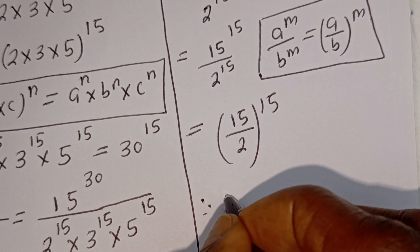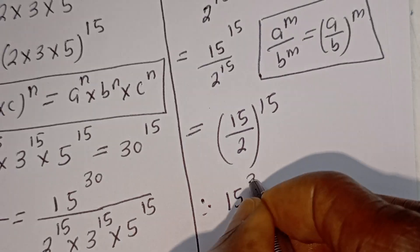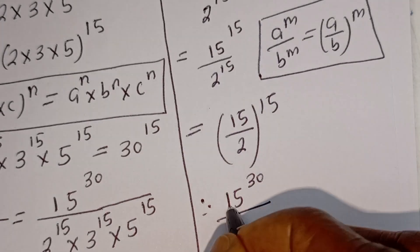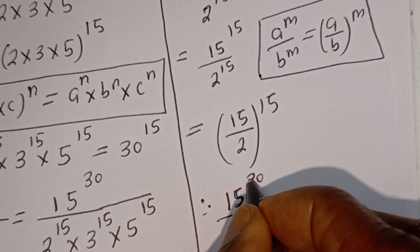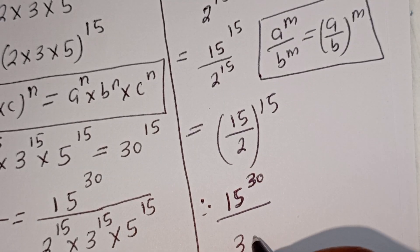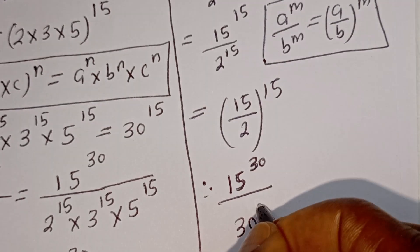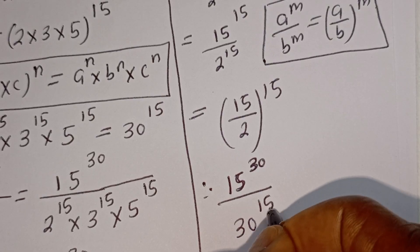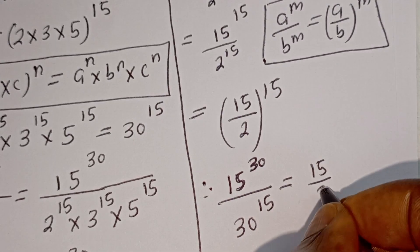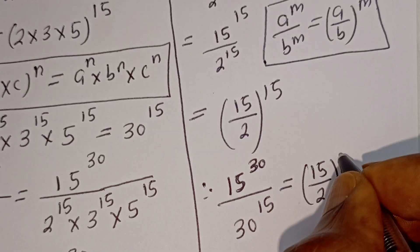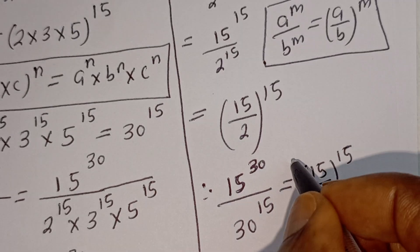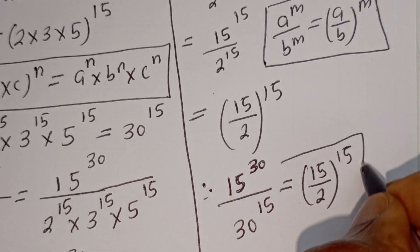Therefore, 15 to the power of 30 divided by 30 to the power of 15 is equal to 15 divided by 2, all to the power of 15, and this is the final answer.